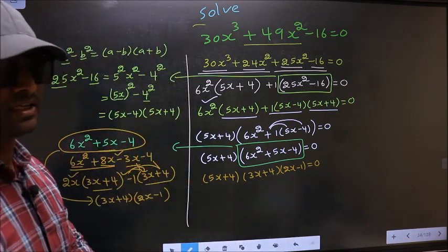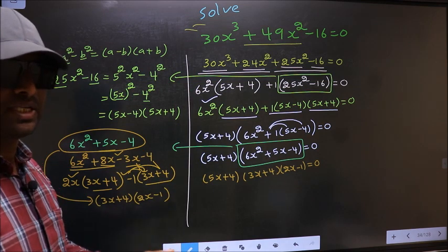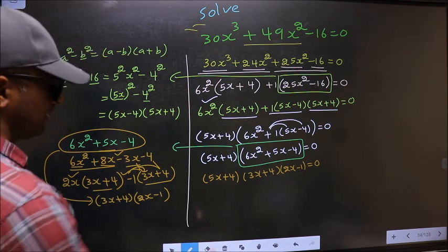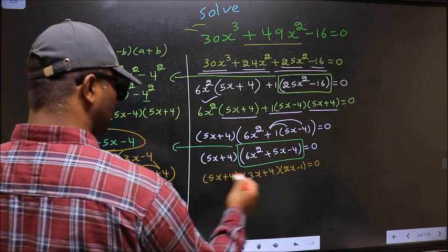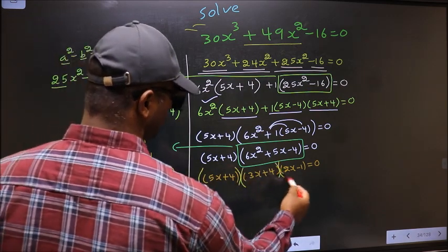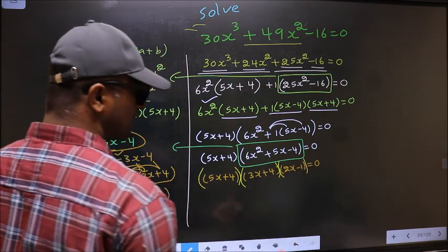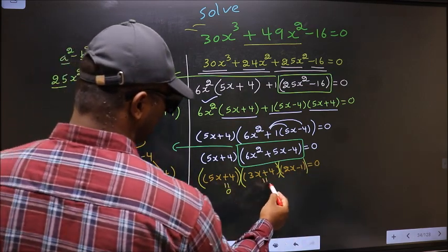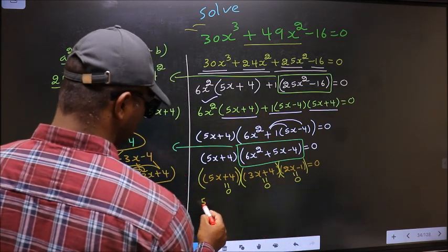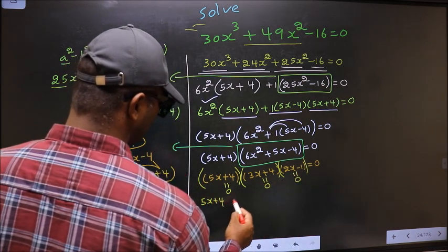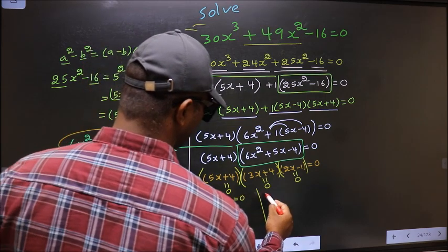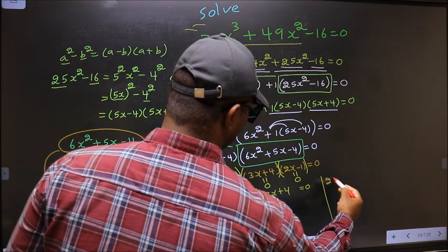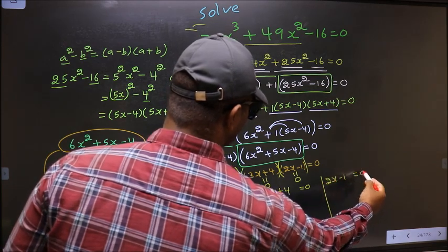We need to get the values of x, and we have a product of brackets equal to 0. So to get the x values we equate each bracket to 0: 5x + 4 = 0, 3x + 4 = 0, and 2x - 1 = 0.